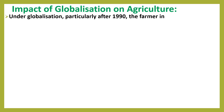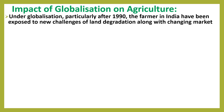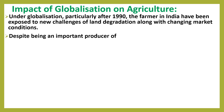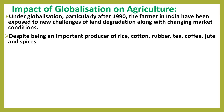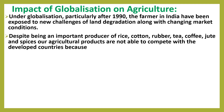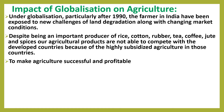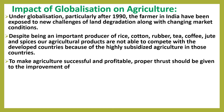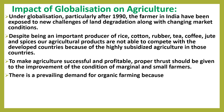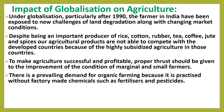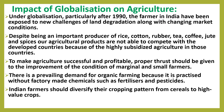Under globalization, particularly after 1990, farmers in India have been exposed to new challenges of land degradation along with changing market conditions. Despite being an important producer of rice, cotton, rubber, tea, coffee, jute and spices, Indian agricultural products are not able to compete with developed countries because of highly subsidized agriculture in those countries. To make agriculture successful and profitable, proper thrust should be given to improving the condition of marginal and small farmers. There is a prevailing demand for organic farming because it is practiced without factory-made chemicals such as fertilizers and pesticides. Indian farmers should diversify their cropping pattern from cereals to high-value crops to increase incomes and reduce environmental degradation simultaneously.